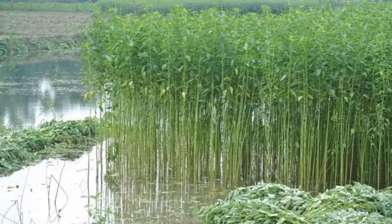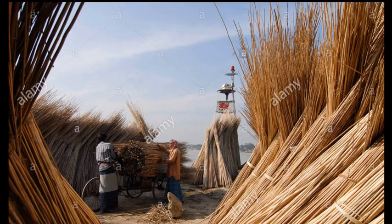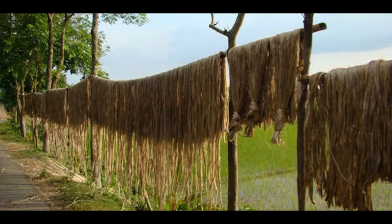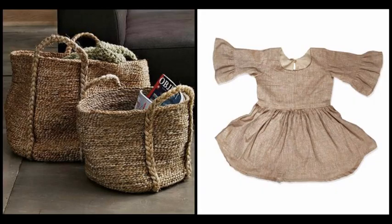Next is jute. This is the jute plant as you can see in the picture here. This is the jute fiber which has been taken out from the plant and is being dried in the sun. Jute fibers are used for making bags and clothes.